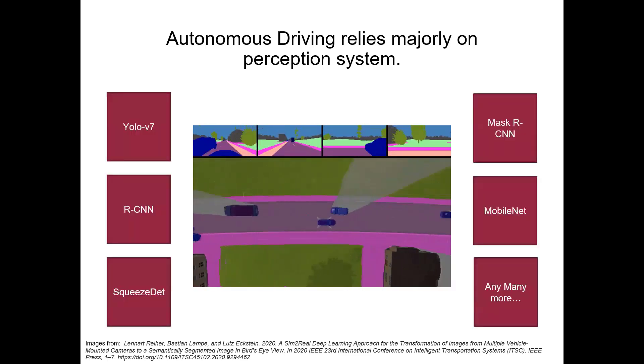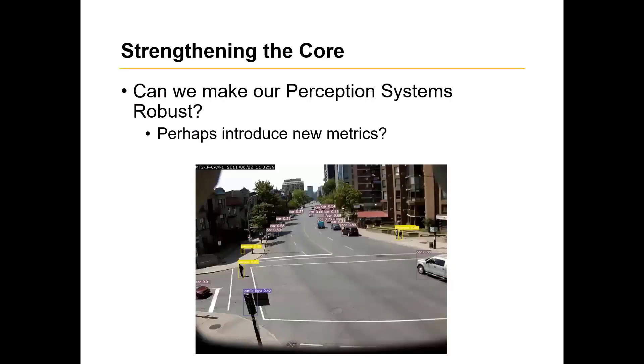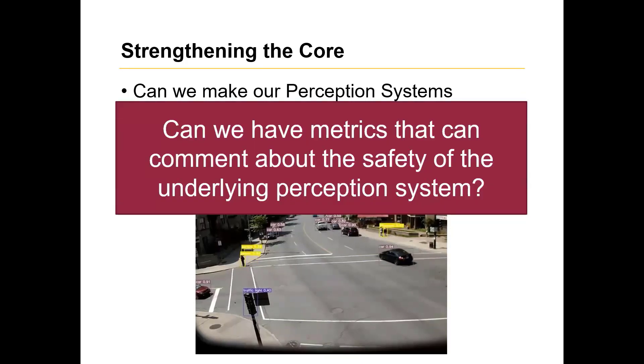And there are many algorithms that can help us do that. And these are just the tip of the iceberg. So the main premise here is that we do have general metrics on how our perception modules work, how good they are, how bad they are. But can we go ahead and comment about how safe they are? So if we have a system which we have already built, we have trained a model, we have a good model, good accuracies, everything is fine. Now can we comment about how safe they are in terms of what our objective is? And the million dollar question here is, can we have metrics that can comment about the safety of the underlying perception system?